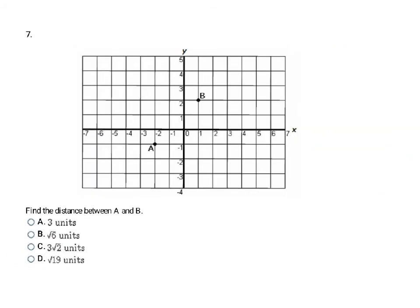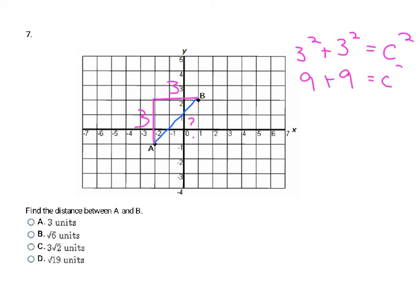Here's another problem where I need to find the distance between A and B. I create a right triangle to use Pythagorean Theorem. I count the first leg: 1, 2, 3 squares. Then the other leg: 1, 2, 3 — it's also 3 squares. I'm looking for the hypotenuse, so: 3 squared plus 3 squared equals C squared. 3 squared is 9, so 9 plus 9 is 18 equals C squared. Looking over at the answers, the only whole number is 3, and 3 times 3 is 9, which is not 18, so I need to take the square root of both sides.